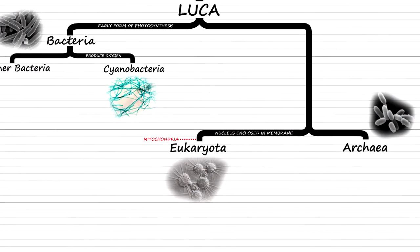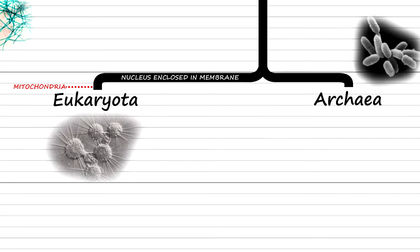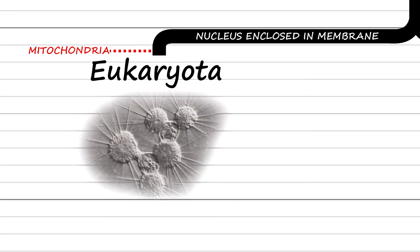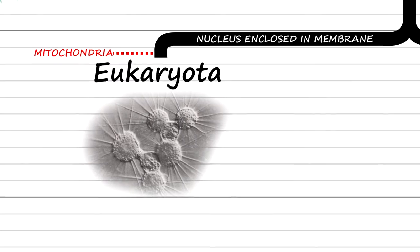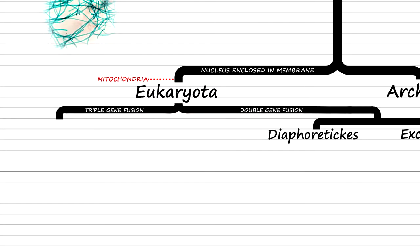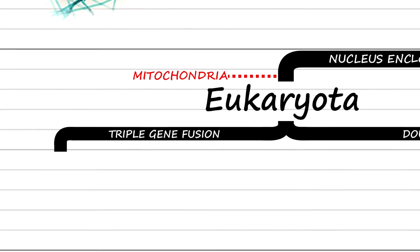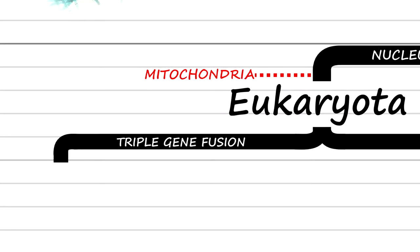We pick up where we left off in the last episode, where we saw the evolution of eukaryotes as well as the introduction of mitochondria into their cells. Soon after that, a split happened. One lineage, which includes the ancestors of animals and fungi, developed triple gene fusion, which allowed for the production of unique molecules.